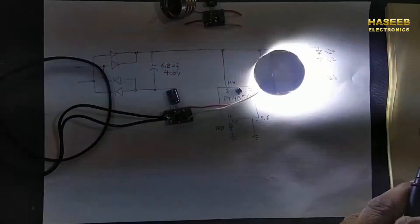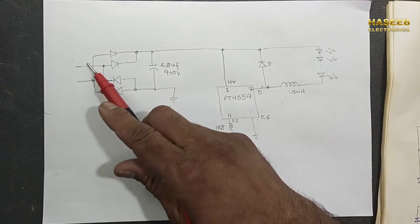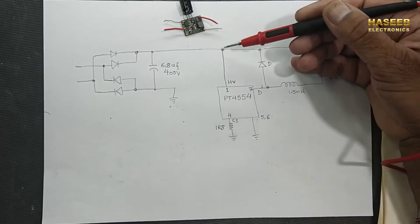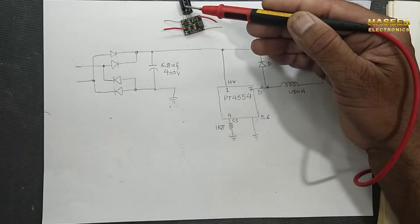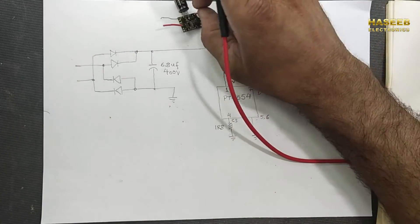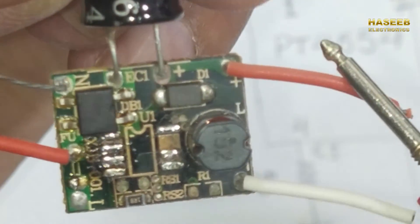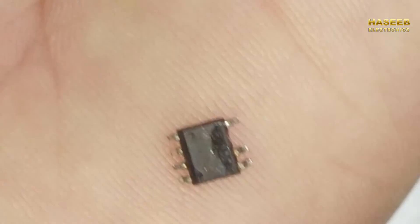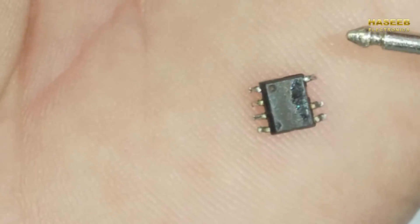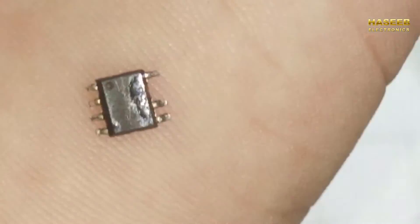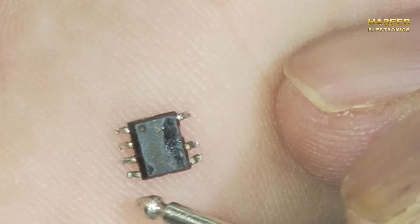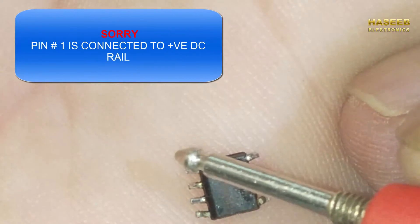In the circuit we have input terminals, then a bridge rectifier, then the DC rail. At the DC rail there is a capacitor — one end is grounded and the positive line reaches directly to this point. We have a 7-pin IC here: PT4554. Pin 8 is the drain, pin 7 is not connected, pins 5 and 6 are ground, pin 4 is current sense, pins 2 and 3 are not connected, and pin 1 is connected to line voltage.